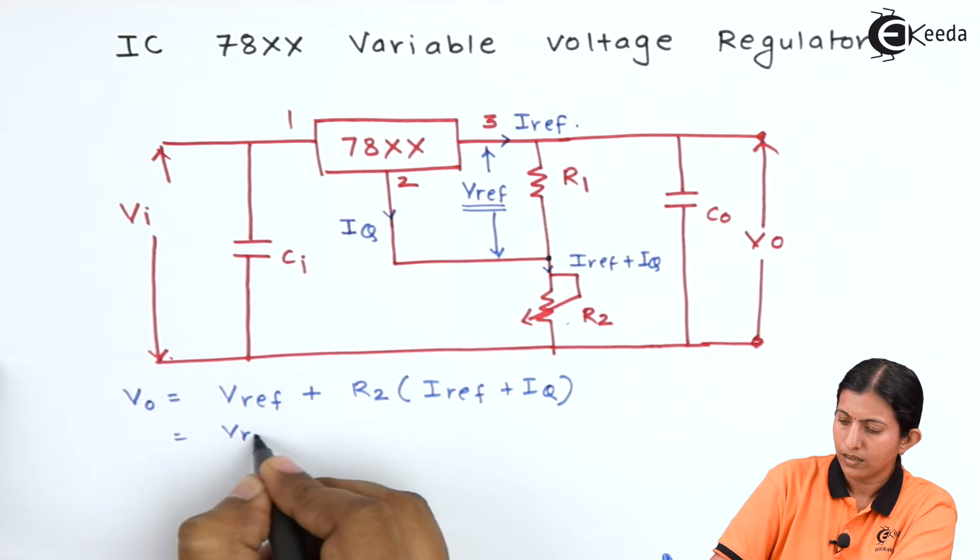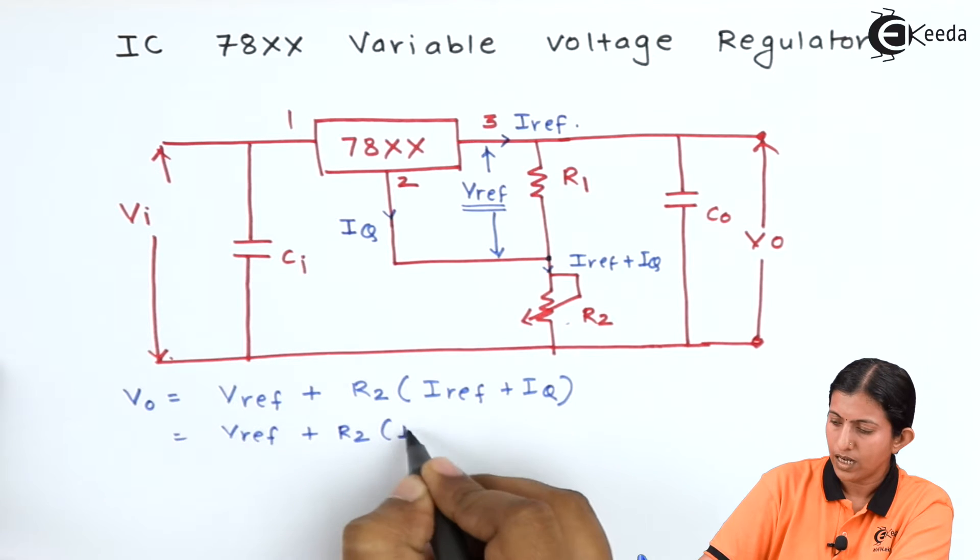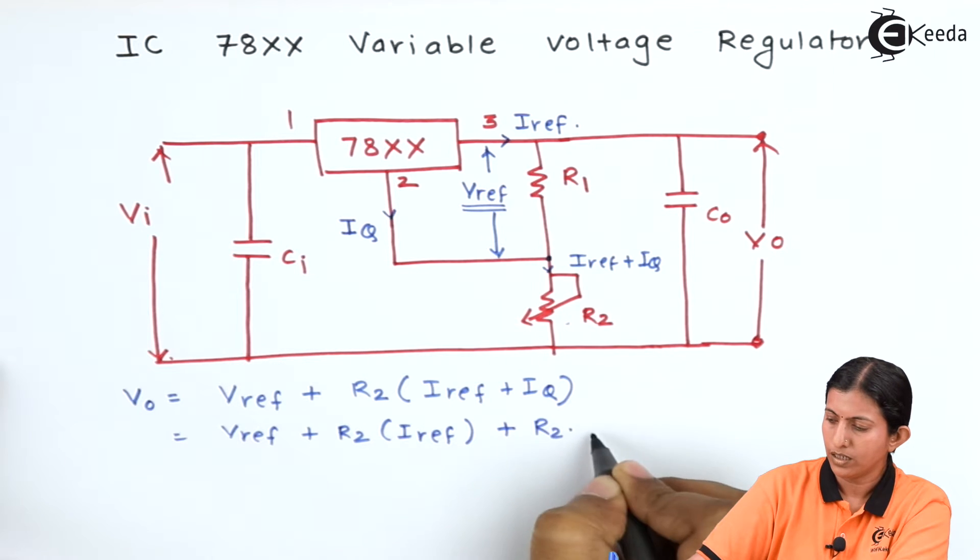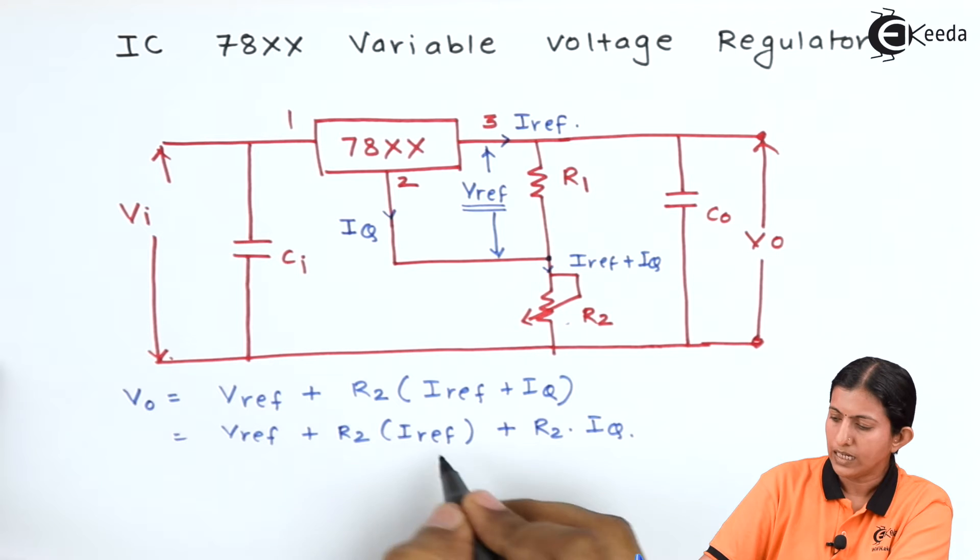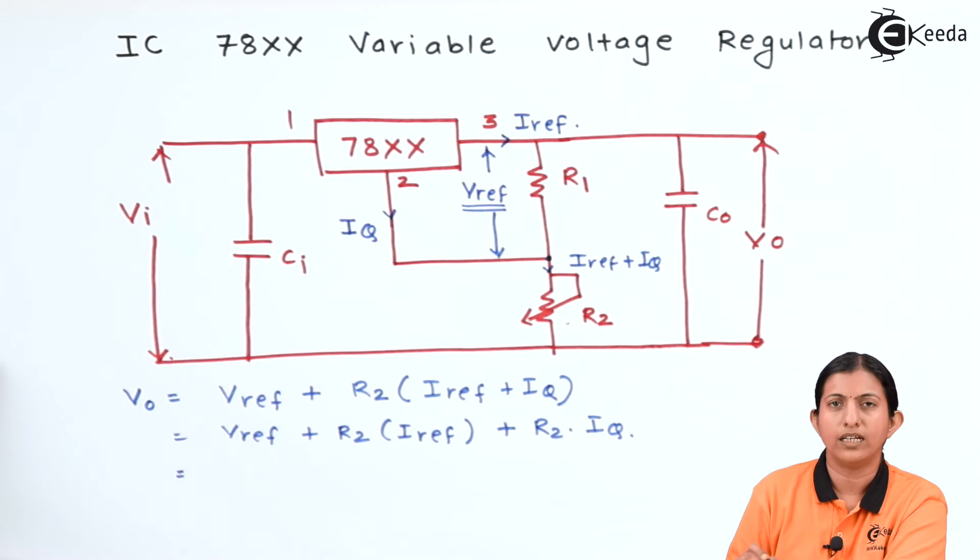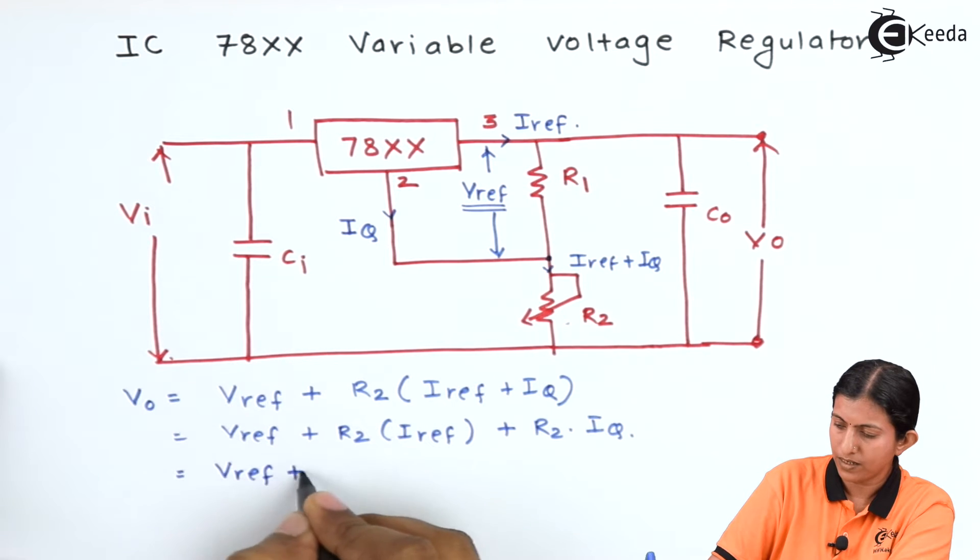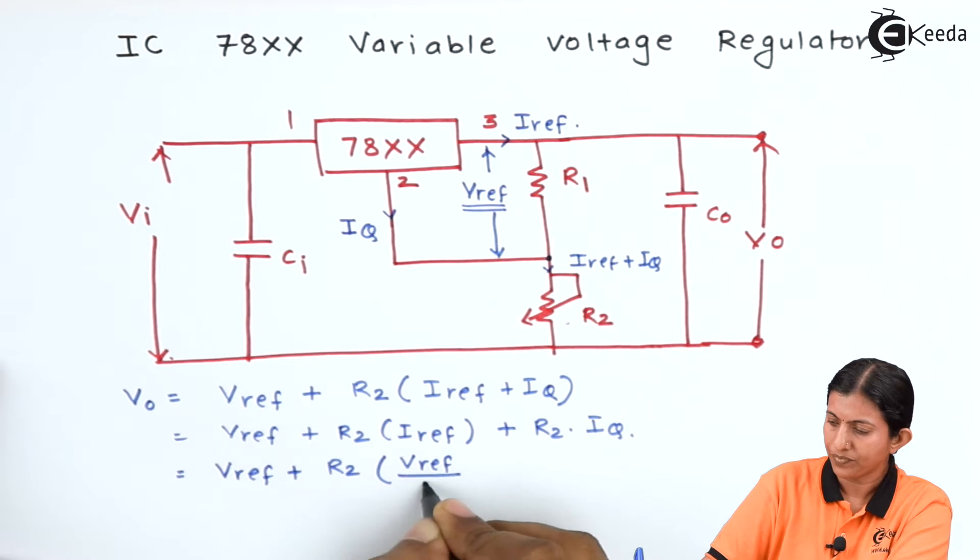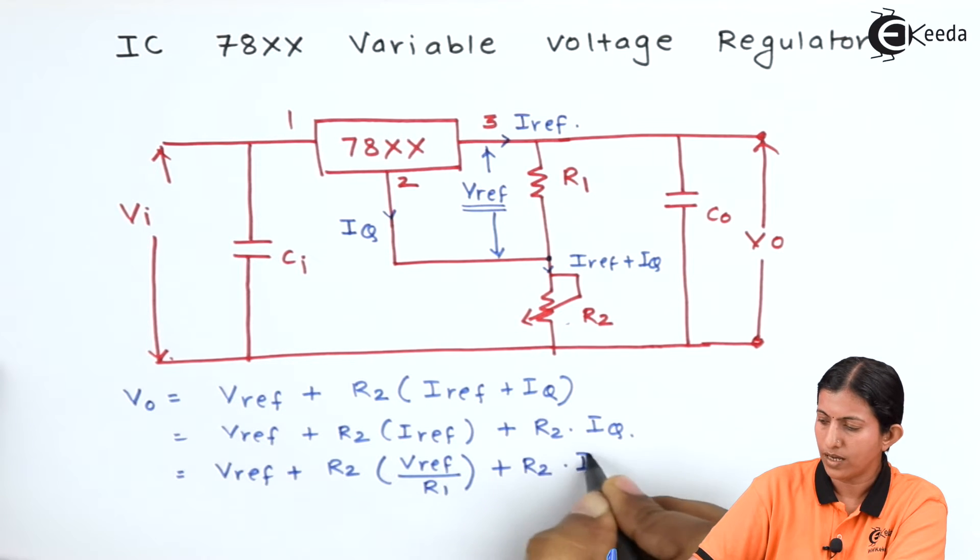We multiply the equation: R2 into I reference plus R2 into Iq. Instead of I reference, we will term in terms of V reference.